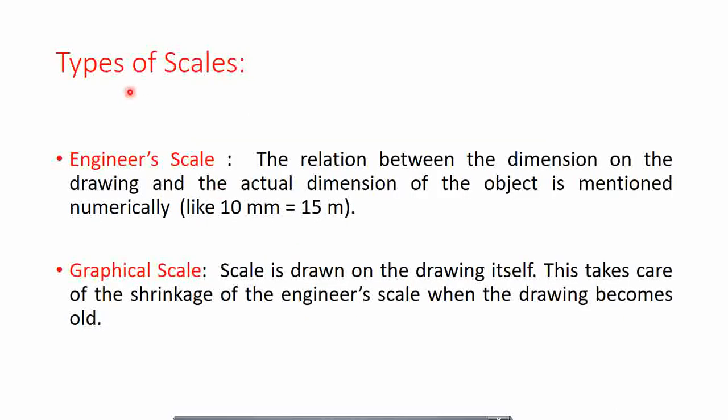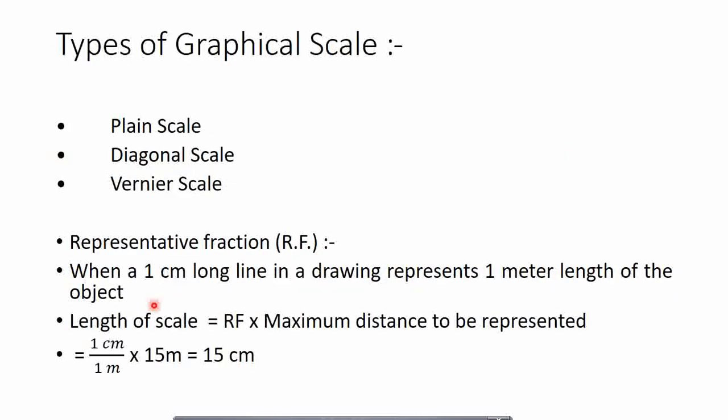There are two types of scales: engineer's scale and graphical scale. In an engineer's scale, we numerically represent the relationship between dimensions in the drawing and the actual dimension — for example, writing '10 mm = 15 meter' at the bottom of the drawing, meaning a 10 mm line represents 15 meters. There is no actual ratio drawn. In a graphical scale, the scale is drawn on the drawing itself, representing the ratio of the original size to the size on the drawing sheet.